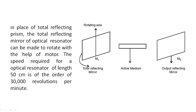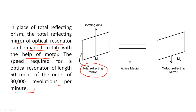In place of the total reflecting prism, the total reflecting mirror of the optical resonator can be made to rotate with the help of a motor. The speed required for an optical resonator of length 50 centimeters is of the order of 30,000 revolutions per minute.